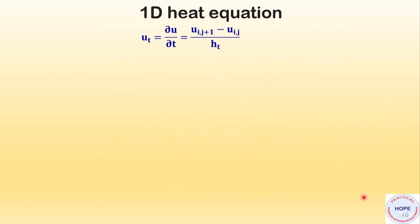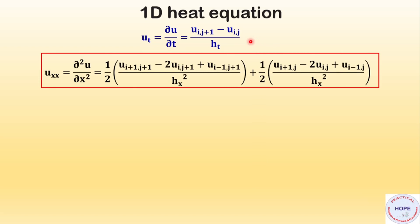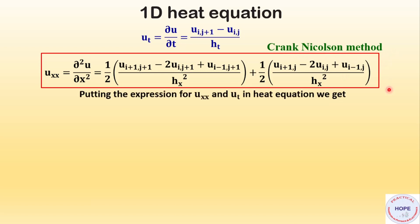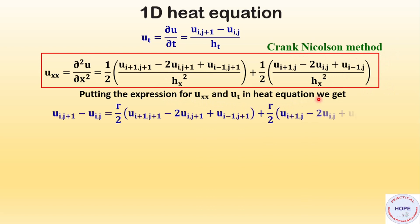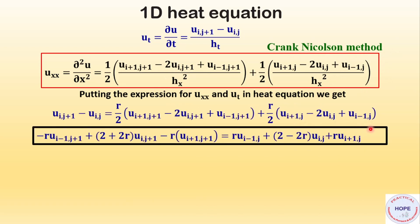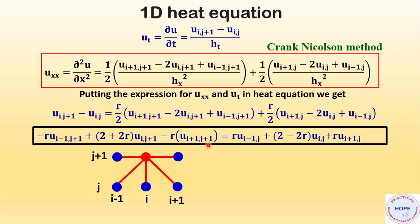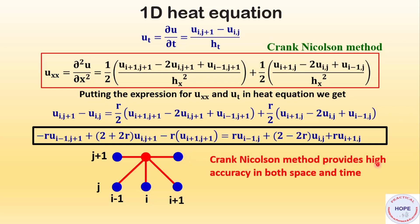There is a third way: u_t is given as before, but we take the average of u_xx at j and at j+1. This method is called the Crank-Nicolson method. Putting the expressions for u_xx and u_t into the heat equation and rearranging, u(i, j+1) can be calculated from u(i-1, j+1), u(i+1, j+1), u(i-1, j), u(i, j), and u(i+1, j) — these five values denoted by blue circles. The Crank-Nicolson method provides high accuracy in both space and time.